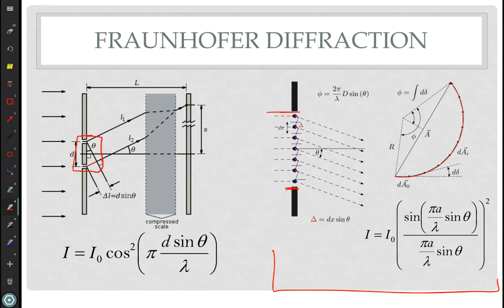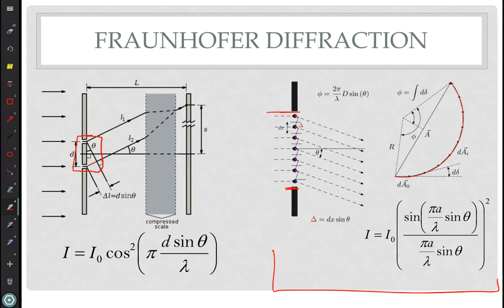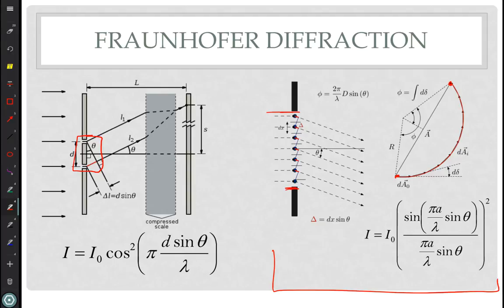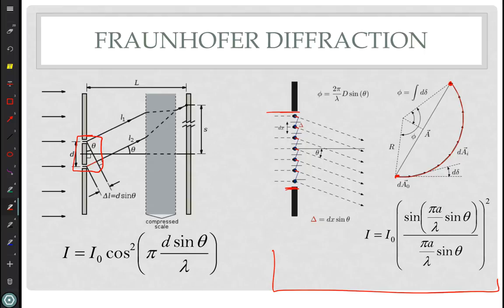For each one of these little slits, you have an electric field of the same magnitude but a slightly different phase when it gets to the screen. You add vectors tip to tail. The red line shows the tip-to-tail addition of each one of those phasors so that the resultant goes from the starting point to the ending point. Then we use geometry from that diagram to calculate what the electric field from start to end is compared to the electric field going across the entire slit, which is just the length of the arc.